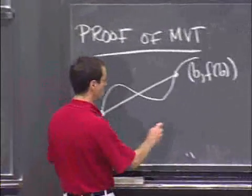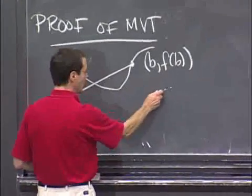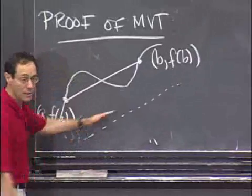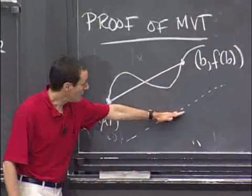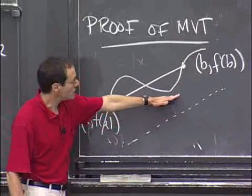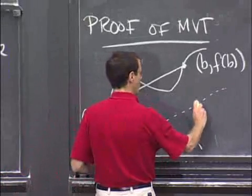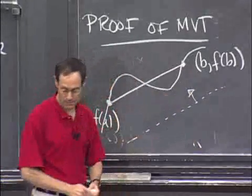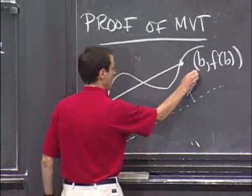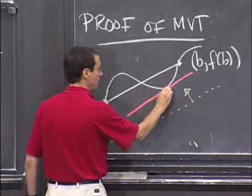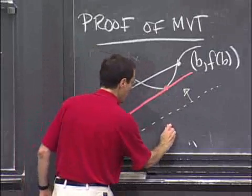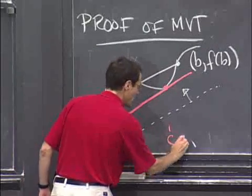So here's how we construct it. We take a parallel line down here and then translate it up, leaving it parallel. We move it up towards this one until it touches. Where it touches, at this point of tangency down there, I've just found my value of c.